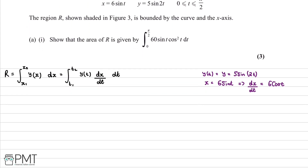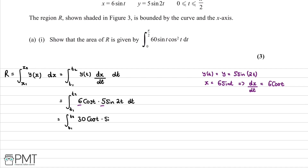Substituting into the integral with limits t1 and t2, we get 6 cos(t) multiplied by 5 sin(2t), integrating with respect to t. Multiplying the constants 6 and 5 together gives us 30 lots of cos(t) multiplied by sin(2t).